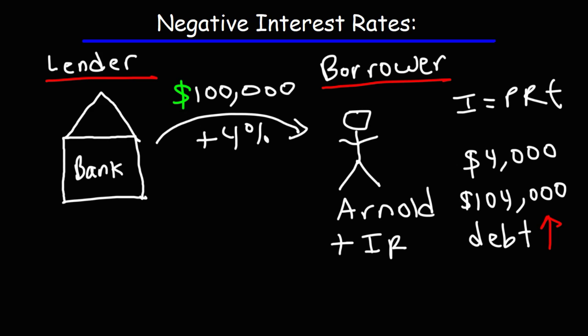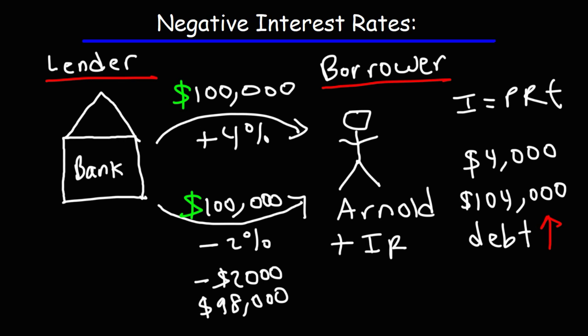But now let's analyze the situation in a negative interest rate environment. So let's say Arnold takes out the same mortgage of $100,000. And let's say the interest is negative 2%, which in reality that's probably not going to happen. But for the sake of illustration, let's say it's negative 2%. So what's going to happen in this case is that his debt is going to go down. In fact, after one year, his debt will decrease by $2,000. He's being credited $2,000 after one year. So $100,000 minus $2,000 is $98,000. So if he doesn't make any payments, his debt will decrease from $100,000 to $98,000.